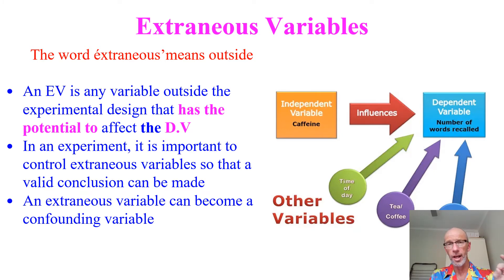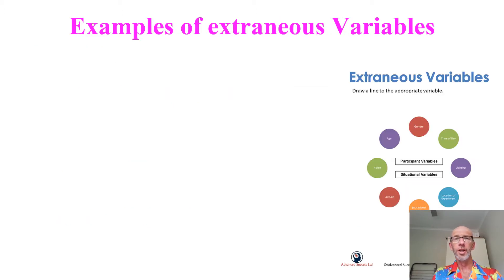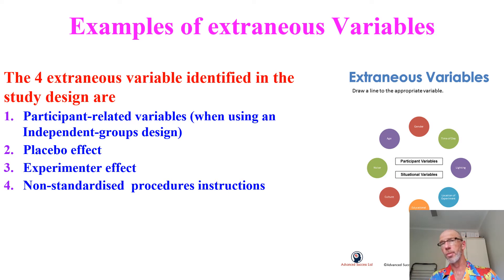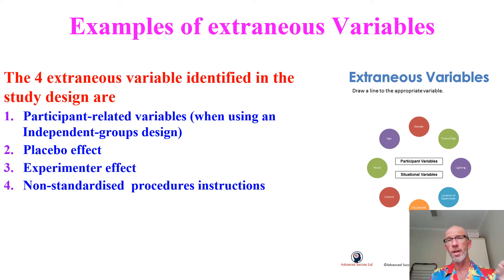Importantly, an extraneous variable can become a confounding variable, and this is where it gets a bit confusing for students. In the VCE study design, there are four extraneous/confounding variables mentioned — these will get airplay in other videos — but any of these are variables other than the independent variable that have the potential to affect the DV, or they could become confounding.